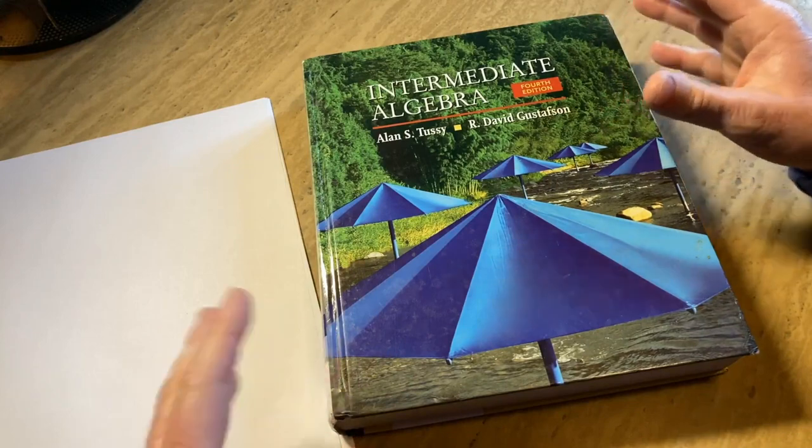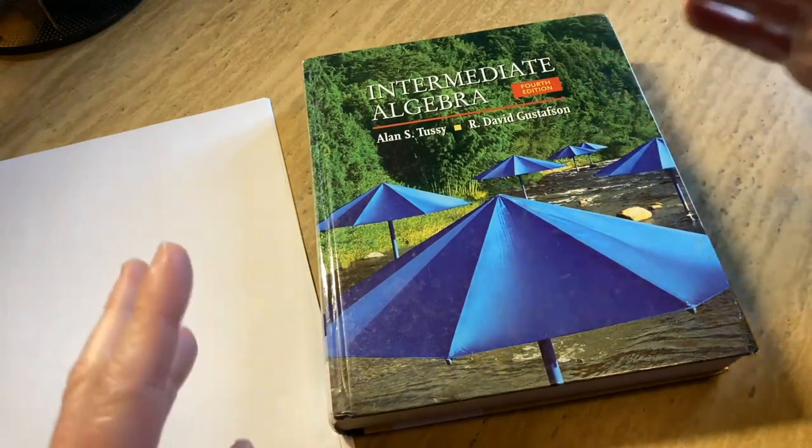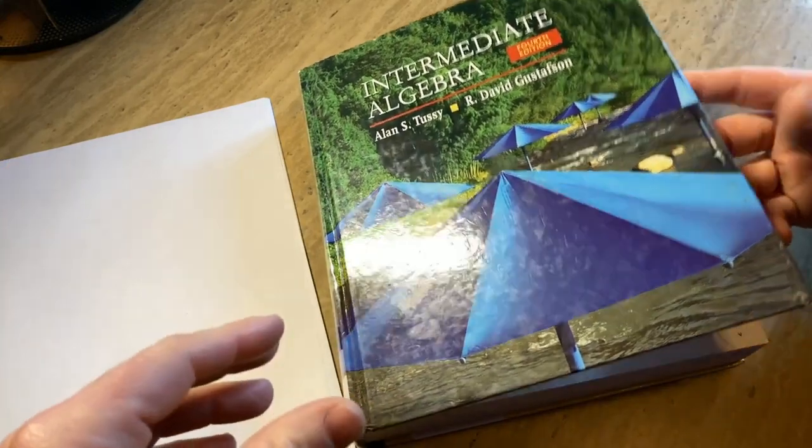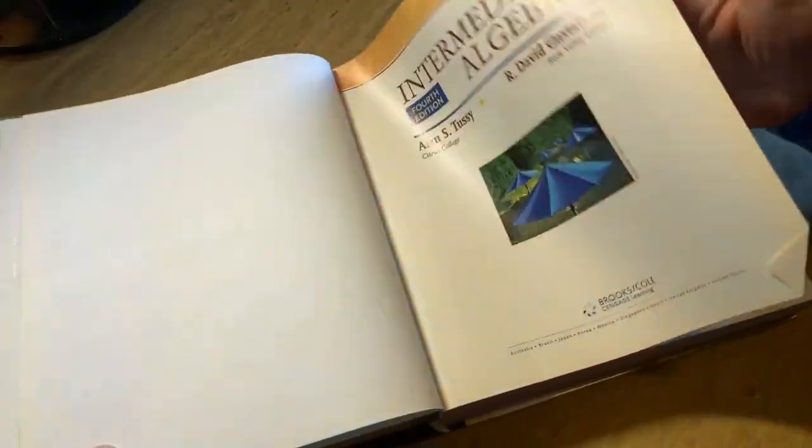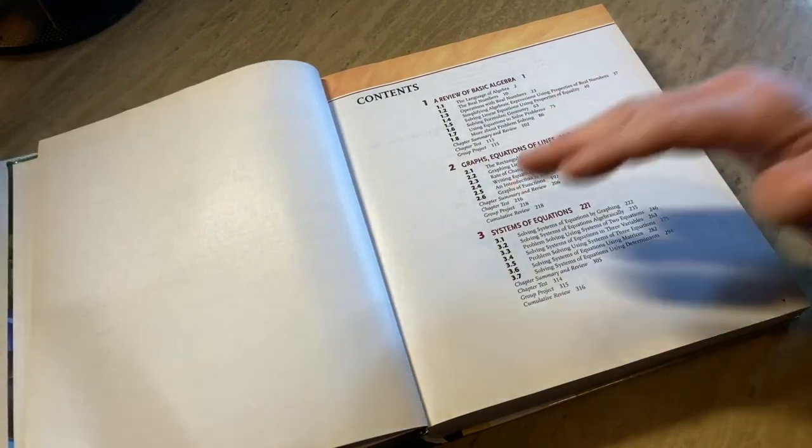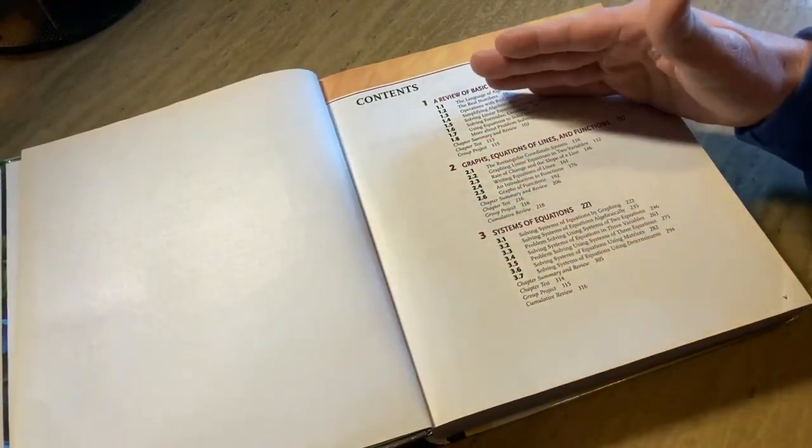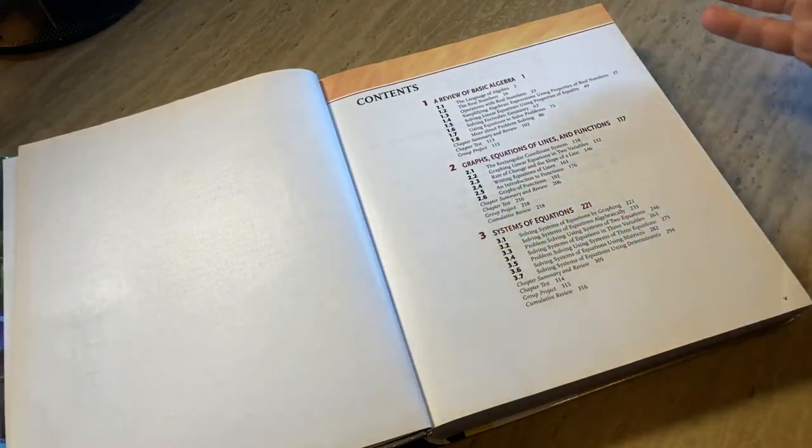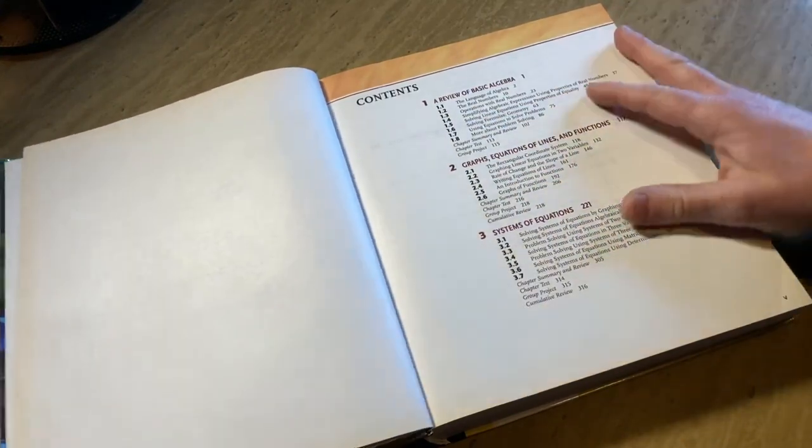If you're wondering, hey, I haven't done math in 30 years, how do I get started? Get this book. This will help you. It's a solution. I don't know how much this book costs. I will look for it and I will leave a link in the description. If I can find it, I'll try to leave a few links because maybe some of them will be used copies and you can get a better deal.